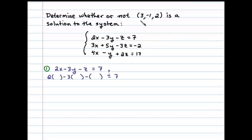We'll substitute 3 in for x, -1 in for y, and 2 in for z, then simplify. We'll have 6 + 3 - 2, and sure enough, 6 + 3 - 2 is 7. We get a true statement, so the ordered triple satisfies the first equation. Now let's look at the second equation.